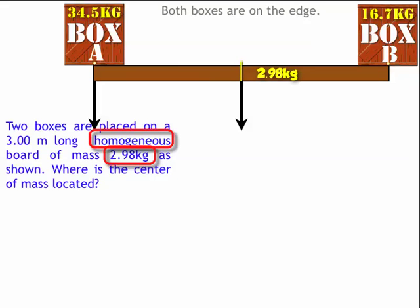Box B, 16.7 kilograms times gravity, is the weight of box B, and that's going to act right on the right edge.